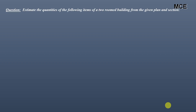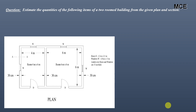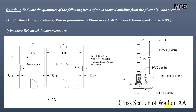Welcome back to Master Civil Engineering. In this video you will learn how to estimate the quantities of a two-room building from its given plan and section using the centerline method. The quantities to estimate are: earthwork in excavation, raft in foundation, plinth in PCC, two-centimeter thick damp proof course, and first class brickwork in superstructure.